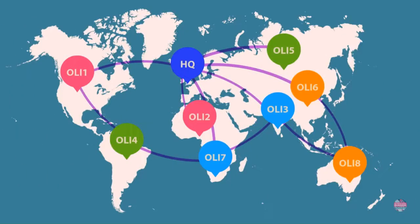By the way, those purple lines that connect our headquarters and investments in different locations represent the network of the multinational enterprise, which we will explore in one of our next videos.